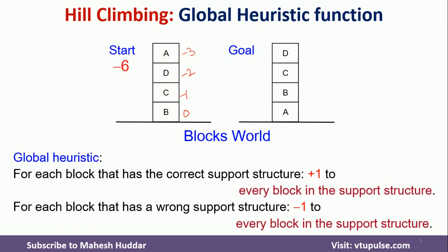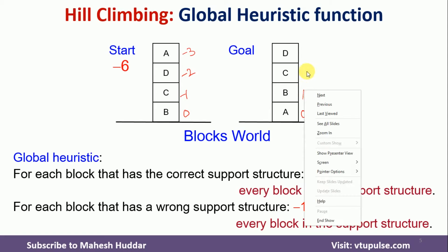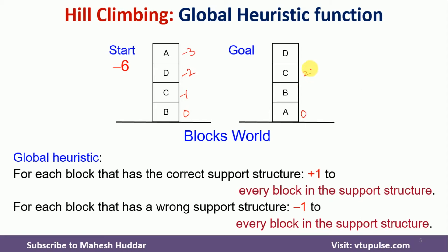For the goal state, all blocks are at correct positions. Below A, nothing is there, so zero. Below B, one correctly placed block, so plus one. Below C, two correctly placed blocks, so plus two. Below D, three correctly placed blocks, so plus three. Total value of the goal state is plus six. The intention is to go from minus six to plus six by applying different operators.